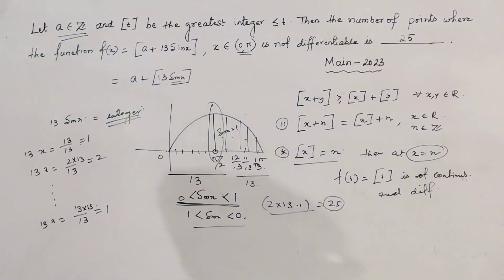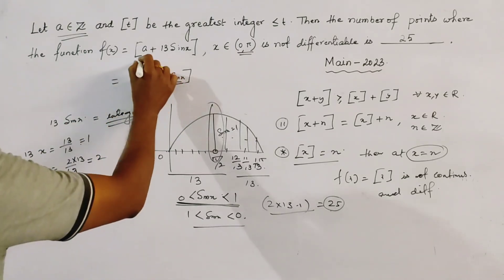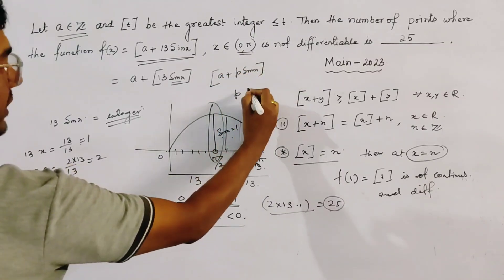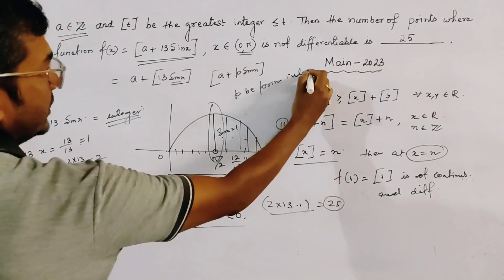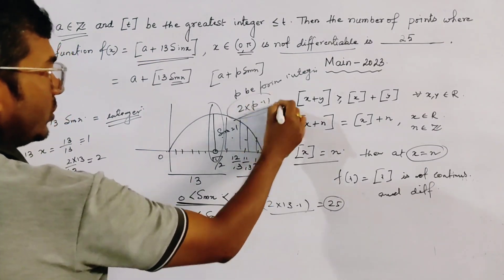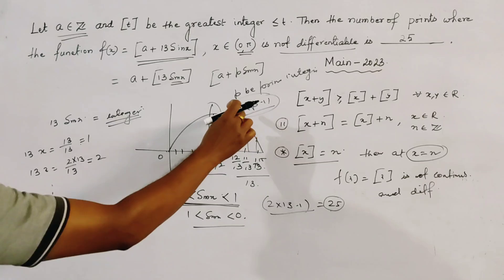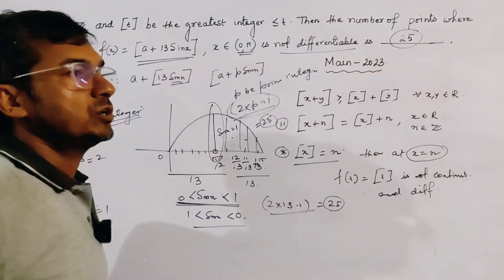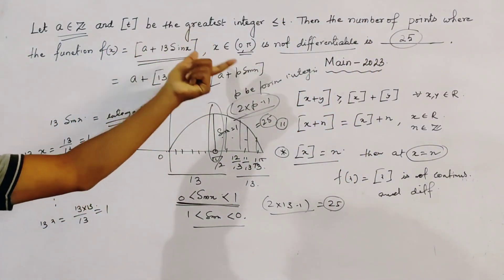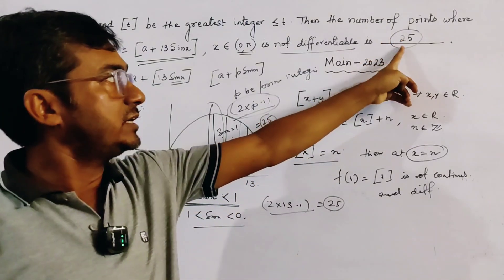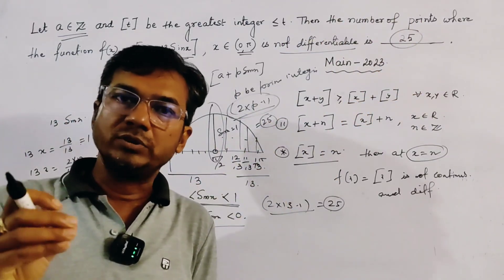You can remember this by a simple formula: if the function is A plus p × sin x, where p is a positive integer, then the number of non-differentiable points is 2p − 1. Substituting p = 13, we get 2 × 13 − 1 = 25. So the answer is 25 — this is the integer-type answer. Thank you for watching.